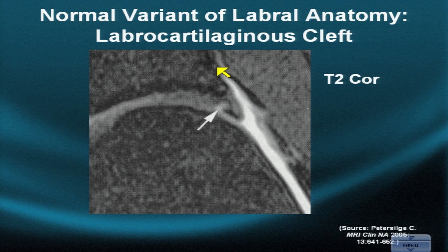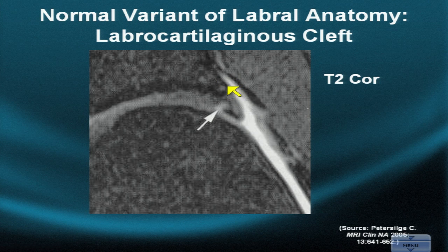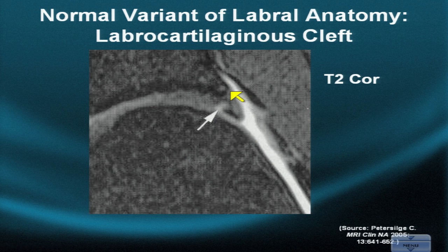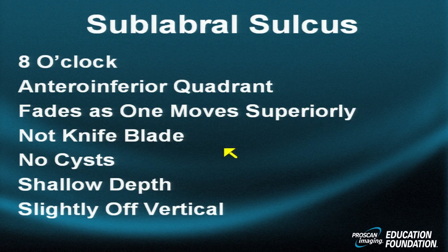The strong iliofemoral ligament reflects several millimeters above the junction between the fibrocartilage and the acetabulum. This reflection is only two to three millimeters in the young person, but gets a little deeper and longer in the adult as the iliofemoral ligament strips with advancing age.